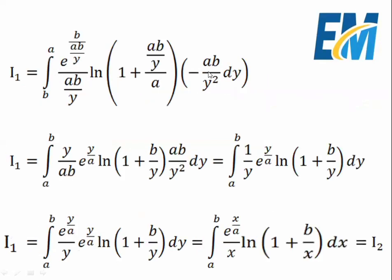Now let's simplify. We can cancel the negative sign and swap the bounds from b to a to a to b. We can cancel b and b, giving 1 over (a/y) which is y/a. Similarly we have 1 over (ab/y) giving y/ab. Here a and a cancel to give b/y. Then we have ab over y squared dy. We cancel ab and ab, and y from y squared to get 1/y. So I1 equals the integral from a to b of (1/y) times e^(y/a) times ln(1 + b/y) dy.